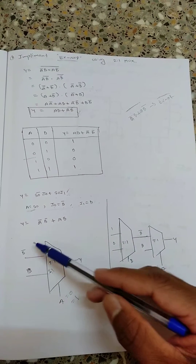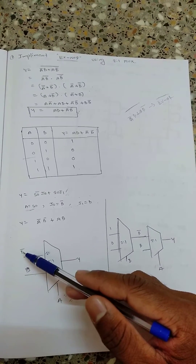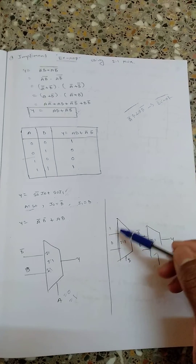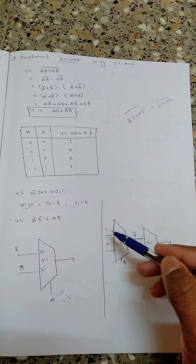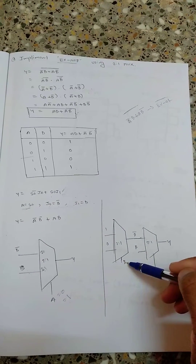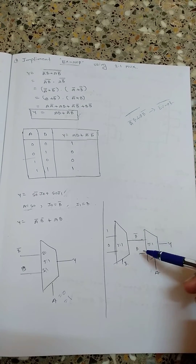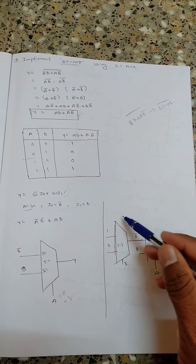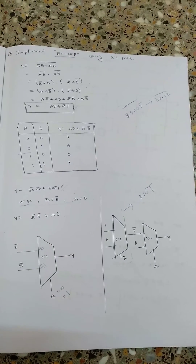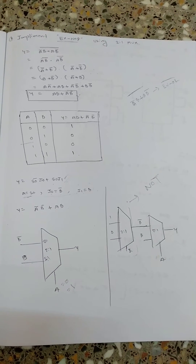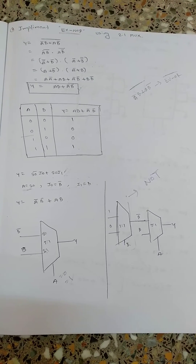In XNOR we use B_bar and B, whereas in XOR it is B and B_bar. Since we cannot use any extra gate, to get B_bar I use another MUX acting as a NOT gate. I connect B as the select line with I_0 = 1 and I_1 = 0, giving B_bar as output. So the final circuit uses two 2x1 MUXes: one acting as a NOT gate to produce B_bar, and the main MUX with B_bar and B as inputs and A as the select line.